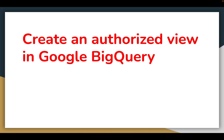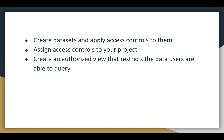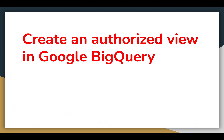Hi friends, hope you are doing great. Today we are going to see how to create an authorized view in Google BigQuery. In this demo, we are going to create datasets and apply access controls to them, assign access controls to our project, and create an authorized view that restricts the data users are able to query. An authorized view means giving your view access to your dataset.